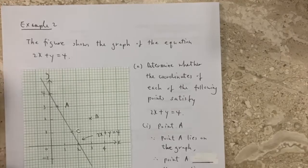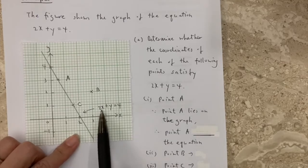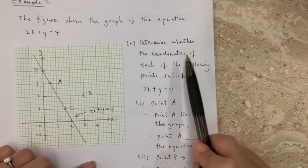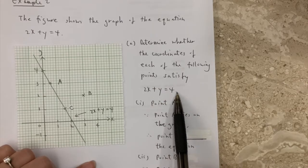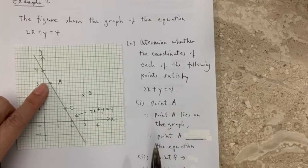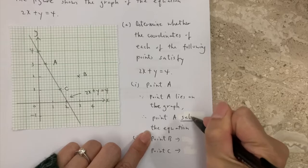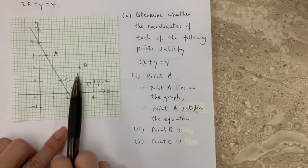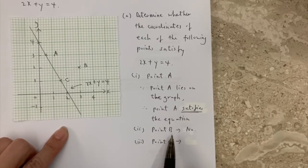In example 2, we don't need to draw any graph. We are given a diagram for the equation 2x plus y equals 4, and we need to determine whether the coordinates of each point satisfy the equation. Point A is lying on the graph, so point A satisfies the equation. Point B does not lie on the graph, so point B does not satisfy the equation.